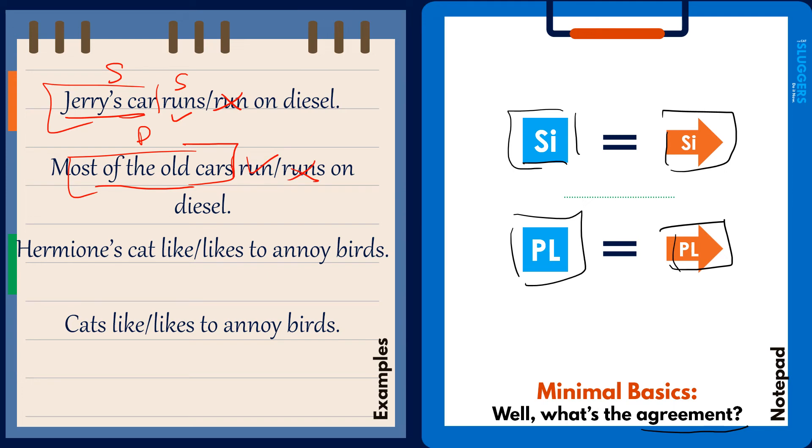'Hermione's cat like or likes to annoy birds.' Hermione's cat happens to be a singular subject, so use the singular form of the verb, 'likes,' not 'like.' 'Cats like or likes to annoy birds.' Cats happens to be the plural subject, so use the plural form of the verb, not the singular form. So 'cats like to annoy birds.'